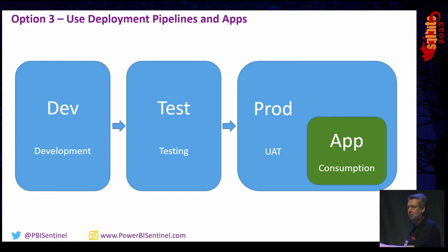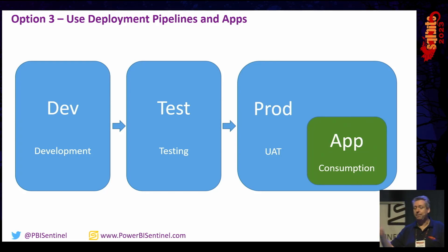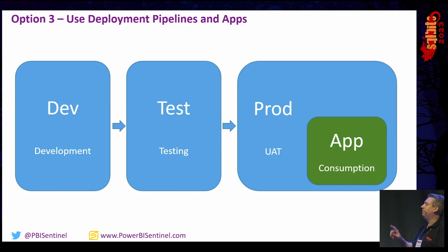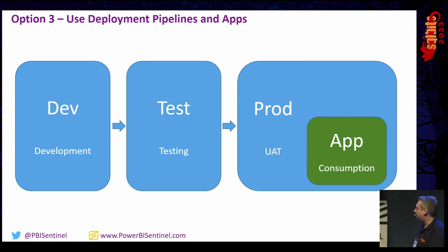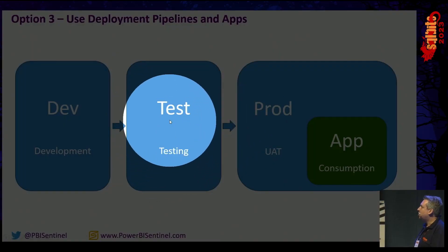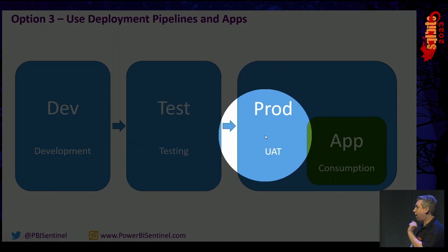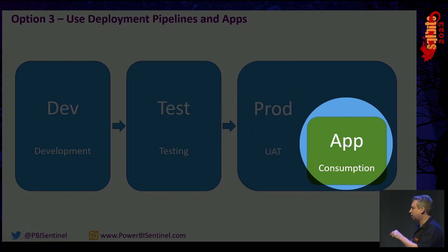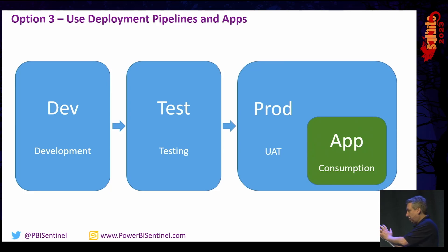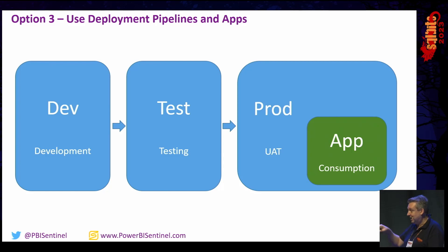Does the app also get promoted by the pipeline? Yes it does. Apps, datasets, reports — however, the contents of the app get deployed when you promote the dataset and report into prod or UAT, and then when you click 'Update App' that updates the app in that workspace. So there are two processes: the deployment pipeline updates the actual workspace, then you click 'Update App' to promote it into the app itself. That's a manual step added on, but all of that process can be hooked into Azure DevOps.